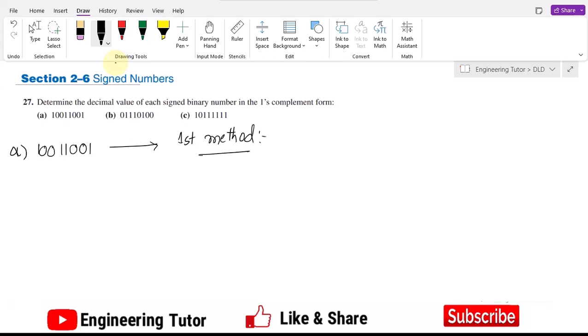According to this method, let me write it using green color. We have to work with the one's complement. The number we have here is 10011001.